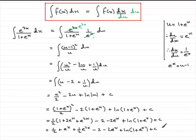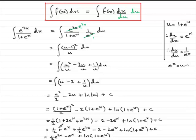Gathering the terms: the e to the 2x term gives half e to the 2x. The e to the x terms: e to the x minus 2e to the x gives minus e to the x. The constant terms: half minus 2 gives minus 3 over 2. So the final answer is half e to the 2x minus e to the x plus the natural log of 1 plus e to the x, minus 3 over 2, plus the constant of integration c. That brings us to the end of this question.